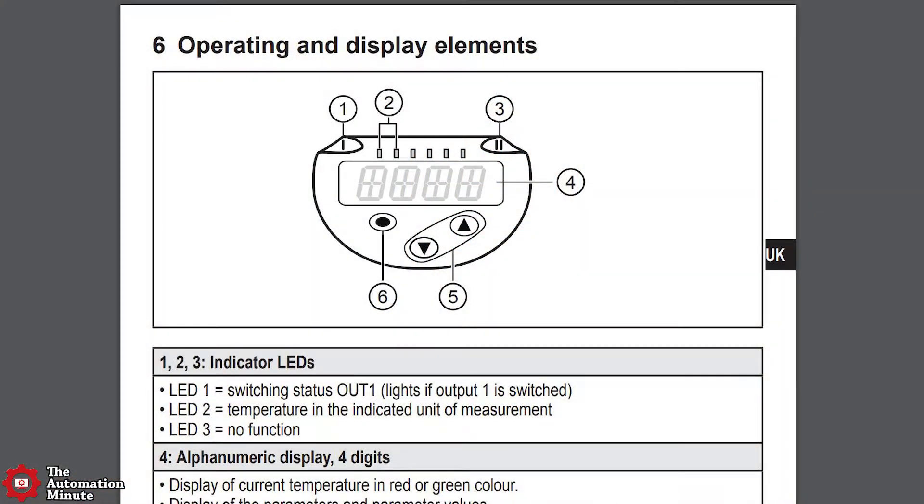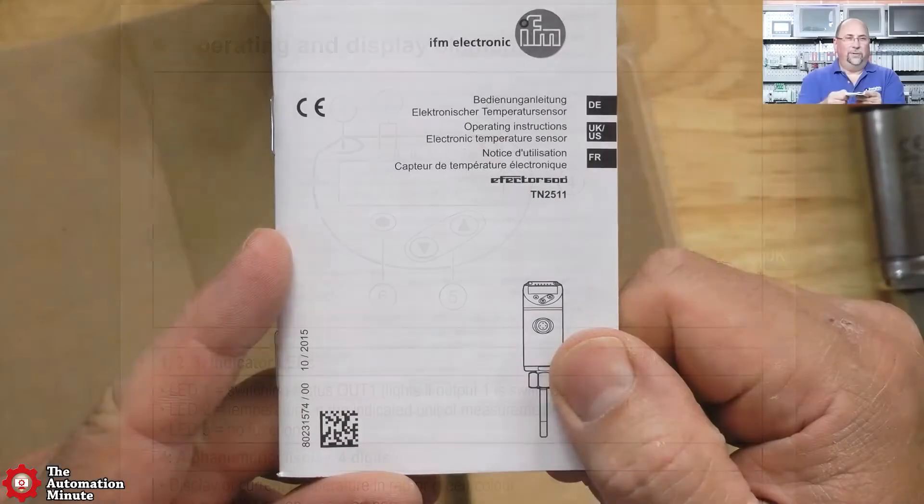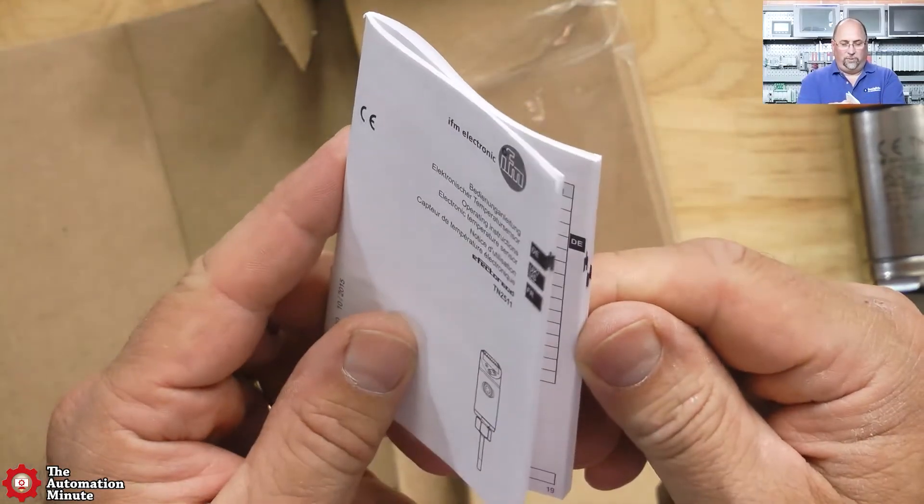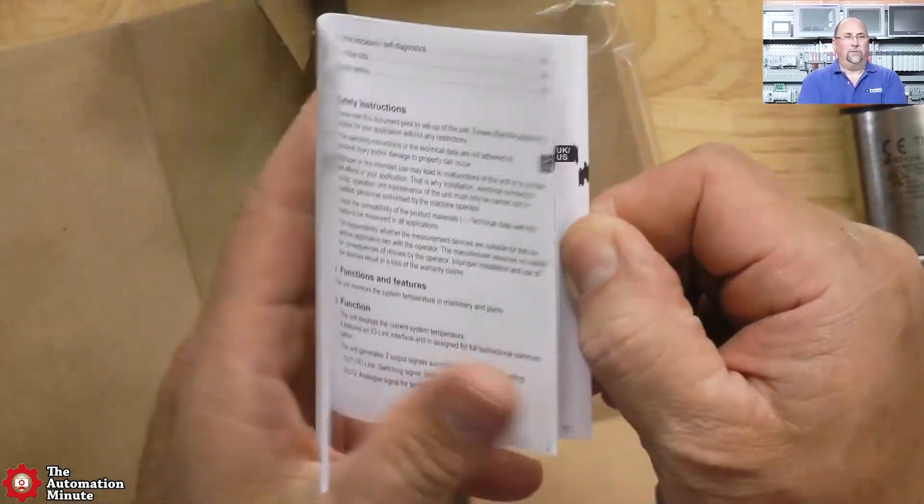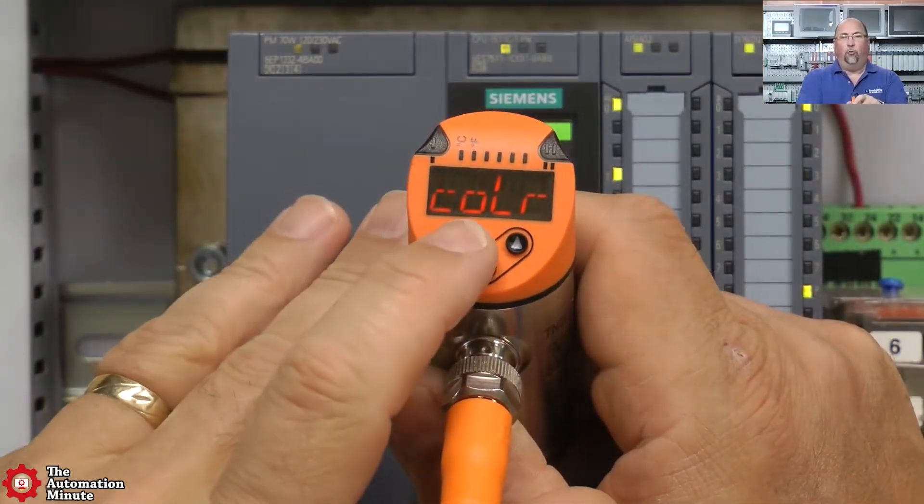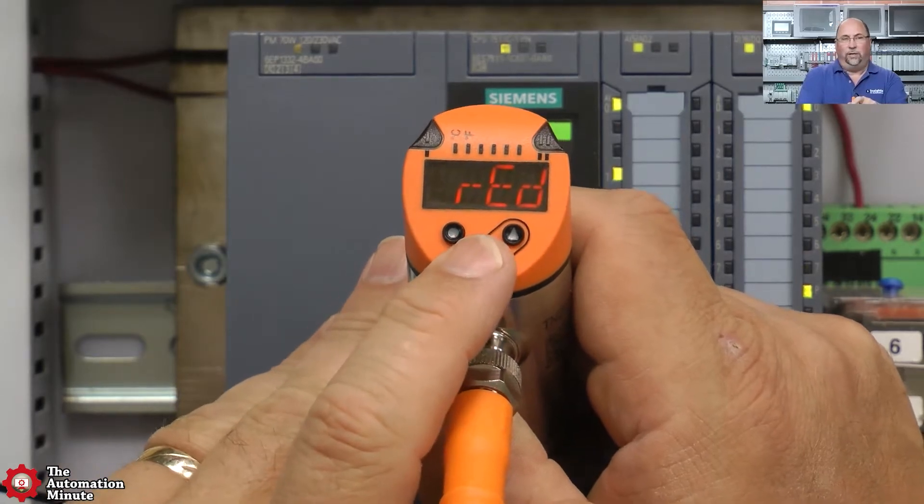The sensor is programmed via the three buttons on the top and the bright dual color display. I have to say that I found the programming manual was very well laid out, the menu was fairly intuitive, and the display was extremely easy to read.